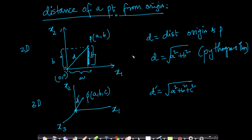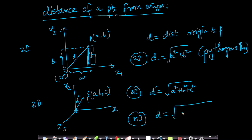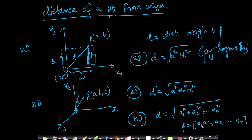This is what it is in 2D and 3D — what about n-dimensional space? If I have an n-dimensional point with components a1, a2, so on, an, the distance of this point from the origin is the square root of a1² + a2² + ... + an². What we learned in 2D and 3D, we can easily extend to n-dimensional space. This is what linear algebra provides you as a basic tool.